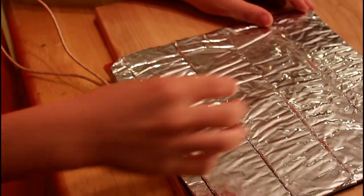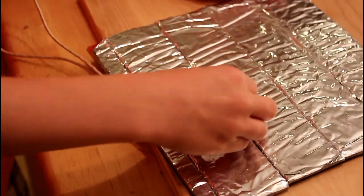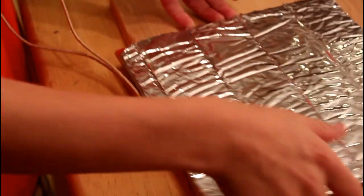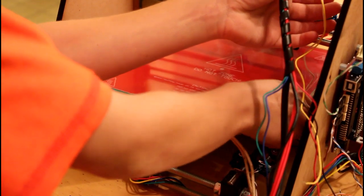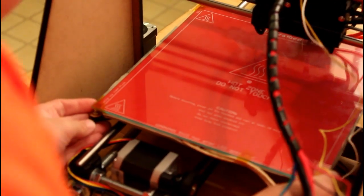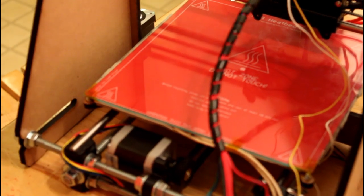All you need to do is install the wires for your thermistor and your heater. And then flip it over and put the heat bed on the screws you installed earlier. And then you're done. You've just installed your PCB hotbed for your 3D printer. Thanks for watching.